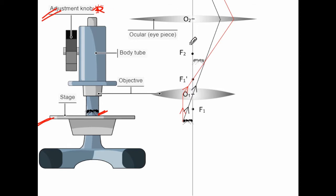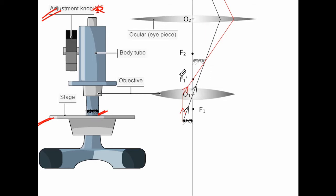Both these lenses are convex lenses. Why is this microscope called a compound microscope? 'Compound' means a mixture of two or more. As you can see, there are two convex lenses, so this microscope is a combination of two convex lenses — that is why it is called the compound microscope.